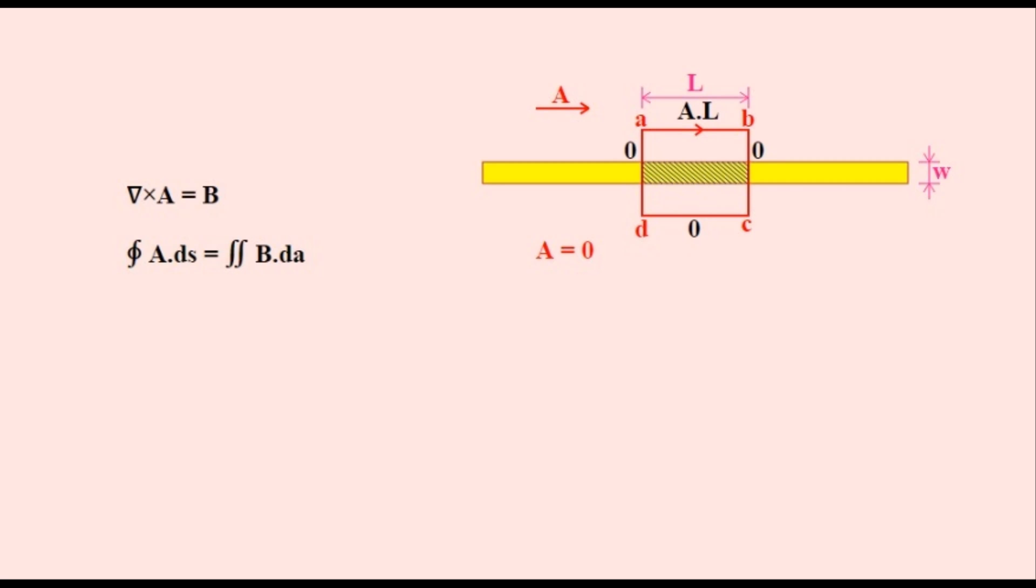The line segment AB is equal to AL because it is the product of A times the loop length L, and A is constant and parallel to L, so the circular integral is AL. The surface integral is equal to the flux inside the loop, which is the shaded region. It is equal to the area L times W times the magnetic field B. The surface integral is thus equal to B times L times W.